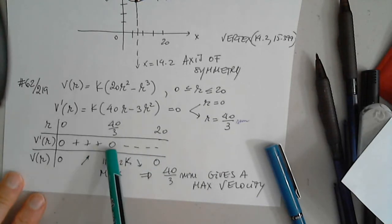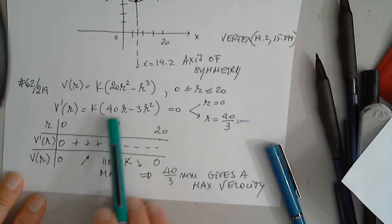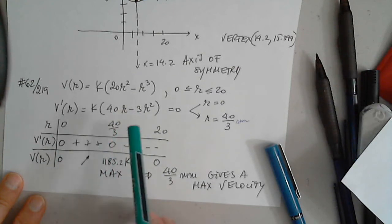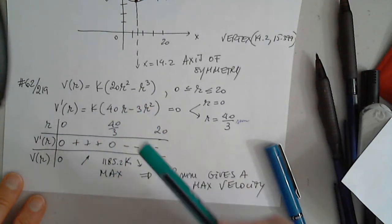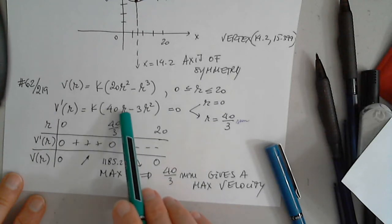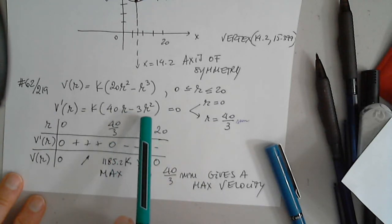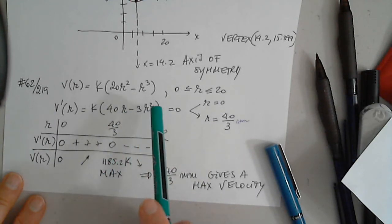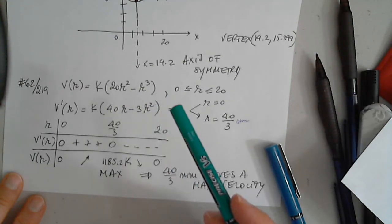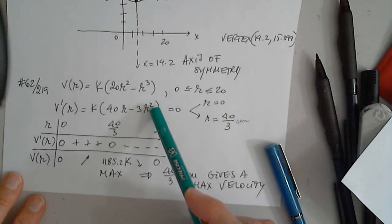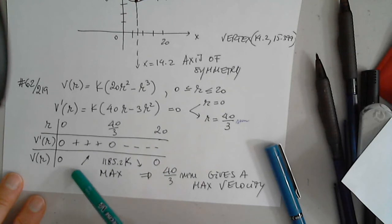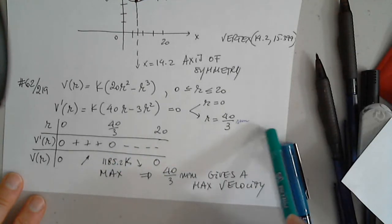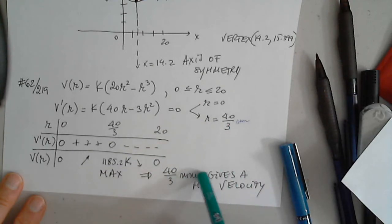When I study the sign, if you plug in 0 here, you should plug in 1. 0 doesn't, it's 0. So if you plug in 1, 40 minus 3 is a positive number. If we plug in 20, it will be a negative number. So the function is increasing and then decreasing. And that gives us, it proves that 40 divided by 3 millimeters